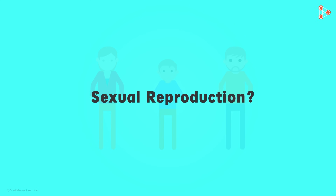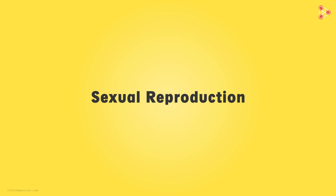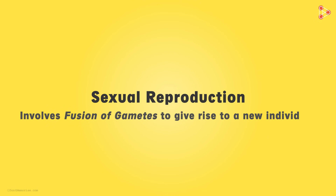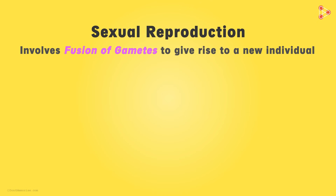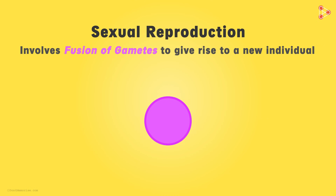Now you may wonder as to how sexual reproduction can be responsible for the variations in organisms. For this, we need to revisit the definition of sexual reproduction. Sexual reproduction is the type of reproduction which involves fusion of gametes to give rise to a new individual. The term 'fusion of gametes' is the answer to our question, because the newly formed individual will have a blend of characters.